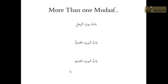What if a sentence has more than one Mudhaf? For example, Baabu Bayti al-Rajuli — here 'Baab' is Mudhaf, 'Bayt' is both Mudhaf and Mudhaf ilayhi, and 'al-Rajul' is the final Mudhaf ilayhi. 'Baab' has a dammah, 'Bayt' has a kasrah — and because 'Bayt' is itself Mudhaf, it cannot have tanwin or alif and lam. The translation is 'the door of the man's house.'